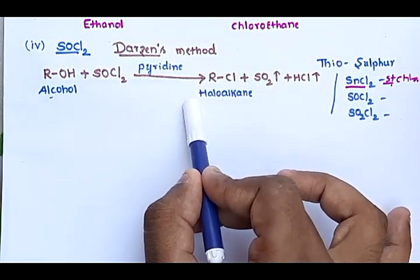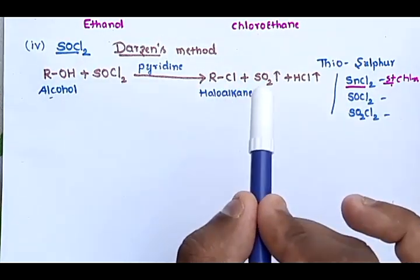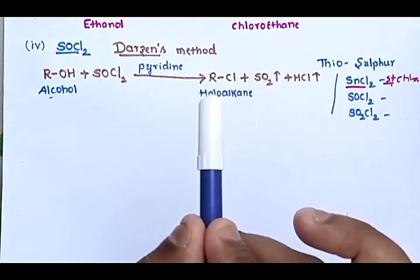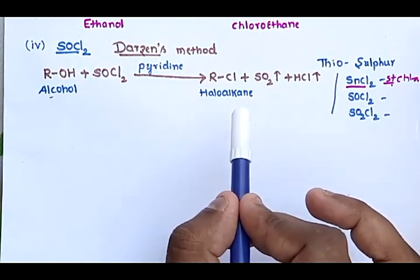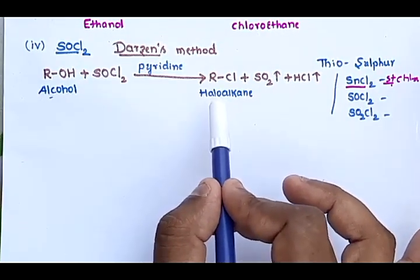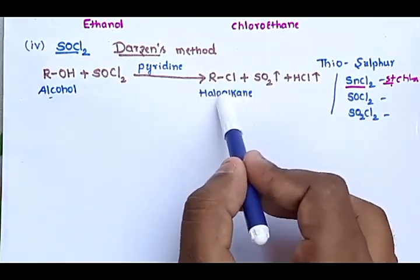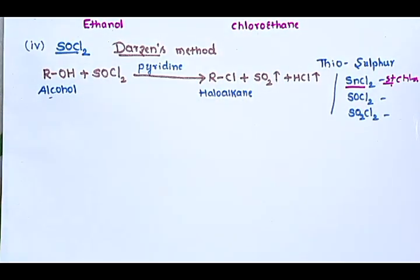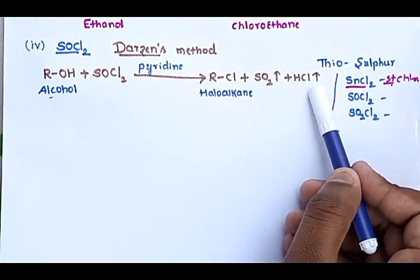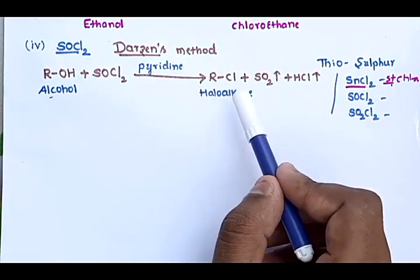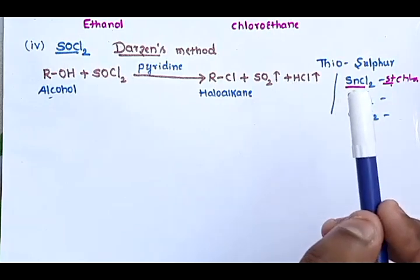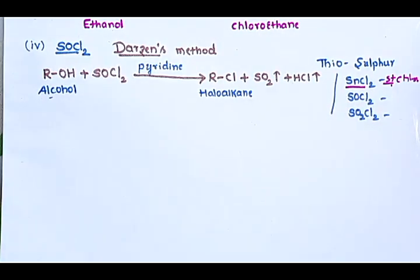Darzen's process doesn't need any purification process. This is the best method for the preparation of haloalkanes because the by-products sulfur dioxide and HCl are gases that escape, so the formed haloalkane does not contain any impurities.